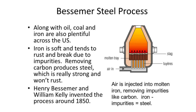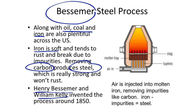Along with oil, coal and iron are also plentiful across the United States. Iron is soft and tends to rust and break due to impurities. Removing carbon produces steel, which is really strong and won't rust. Henry Bessemer and William Kelly invented the Bessemer steel process around 1850, basically to produce steel strong enough to create larger products like skyscrapers.